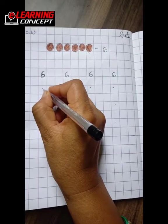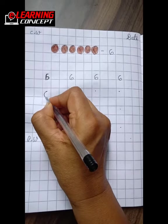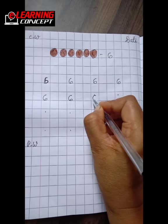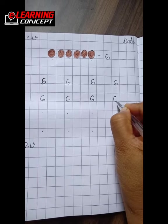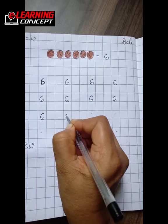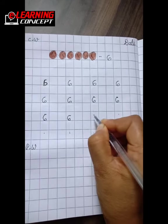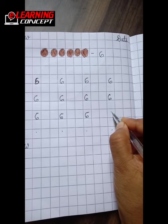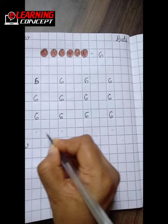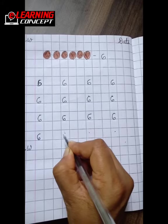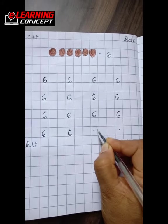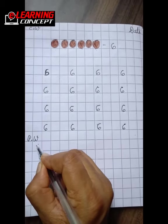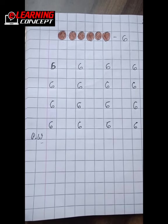Now write 6, curve and small circle. 6, curve and small circle. Curve and small circle. And practice work.